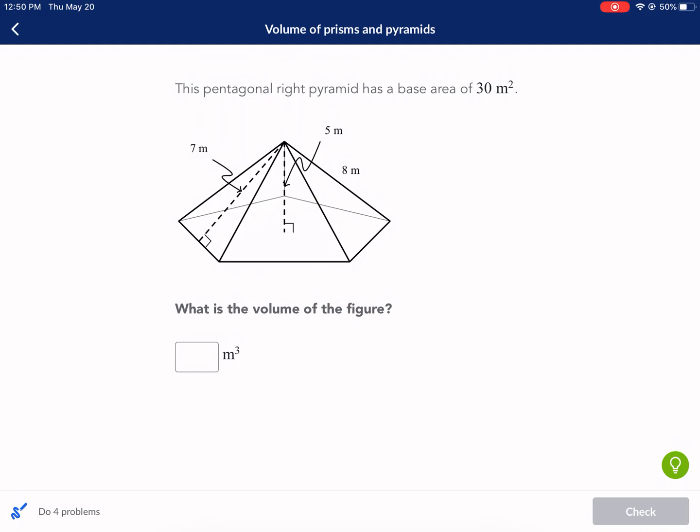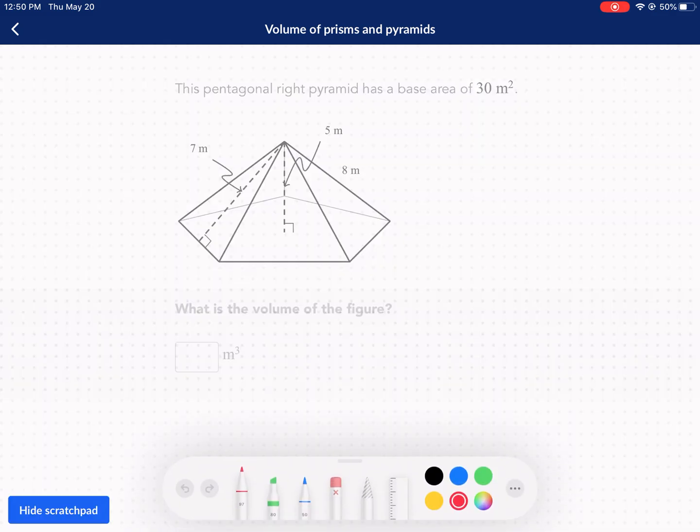This pentagonal right pyramid has a base area of 30 meters squared. What is the volume of the figure? Now this helps us out a bunch by telling us the base area. The volume of a pyramid is one third the area of the base times the height. So the area of the base is already given to us. We only need the height and then we're ready to roll with the rest of this problem.